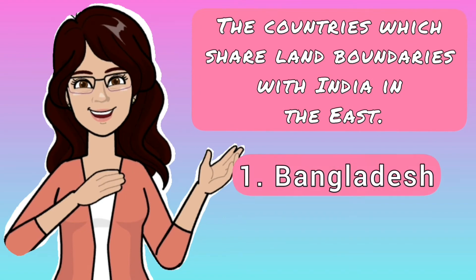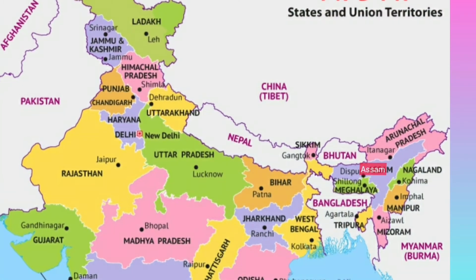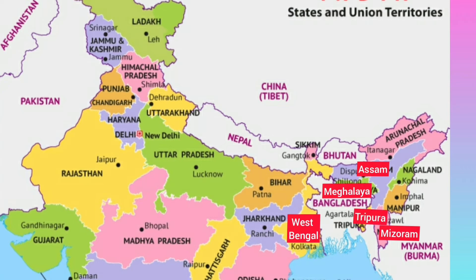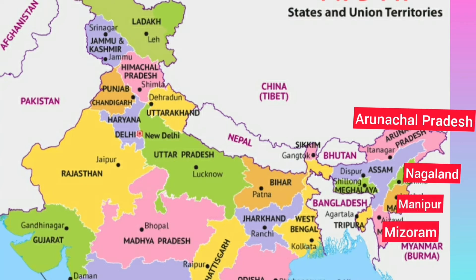Now we will know about the eastern neighbours — they are Bangladesh and Myanmar. Assam, West Bengal, Mizoram, Meghalaya, and Tripura share borders with Bangladesh. Whereas Arunachal Pradesh, Nagaland, Manipur, and Mizoram share an international boundary with Myanmar.